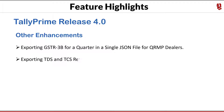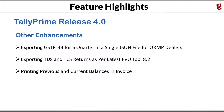Exporting of TDS and TCS return information is now compatible with the latest FEU tool version 8.2 for validation. A small enhancement also allows printing of previous and current balances on the face of the invoice. Before printing, go to Configure and under Party Details you will find a new option — show previous and current balances — set it to Yes, and the balances will be printed just below the total column. There are more minor enhancements and bug fixes available in the Release 4.0 release notes.